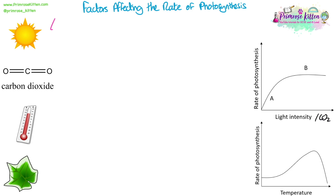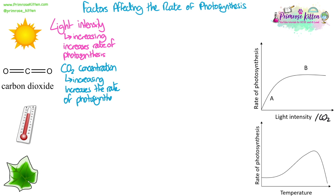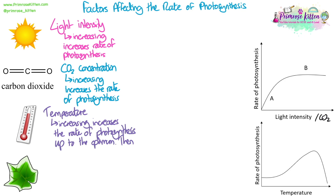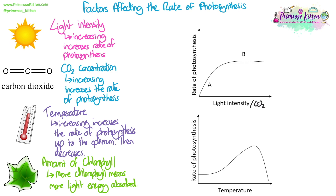We need to know the factors that can affect the rate of photosynthesis. As you increase light intensity, it increases the rate of photosynthesis. As you increase the carbon dioxide concentration, it increases the rate of photosynthesis. Photosynthesis is an enzyme-controlled reaction, so increasing the temperature increases the rate up until the optimum, then it decreases past that optimum temperature. The amount of chlorophyll in chloroplasts also matters — more chlorophyll means more light energy can be absorbed, so the rate of photosynthesis can be increased.